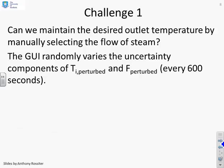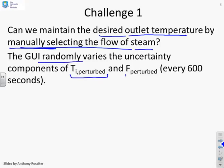Now let's give you a challenge. Can you maintain the desired outlet temperature by manually selecting the flow of steam? Pretend it's a human who's trying to control the outlet temperature, a bit like you in a shower. Can you manually change the lever in order to get the desired outlet? The key thing here is the GUI is going to randomly vary the perturbations on the inlet temperature and the inlet flow.